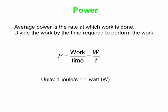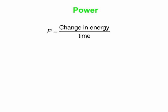One watt is one joule per second. So for instance, a 100-watt light bulb is using up energy at the rate of 100 joules every single second. And since work is change in energy, another way to define power is as the change in energy over time.